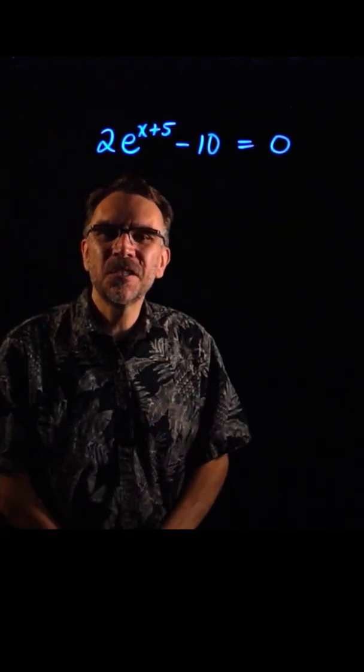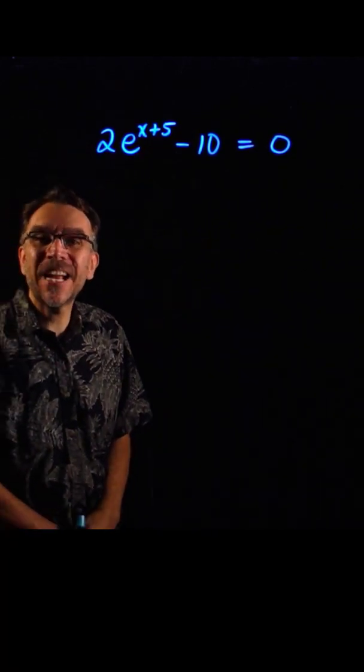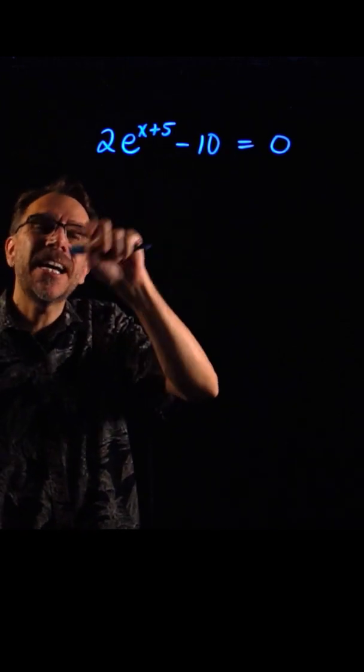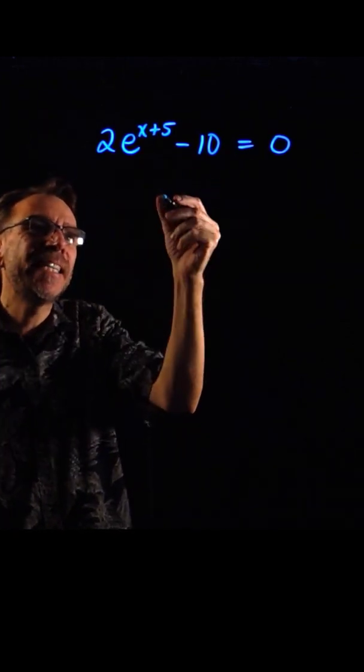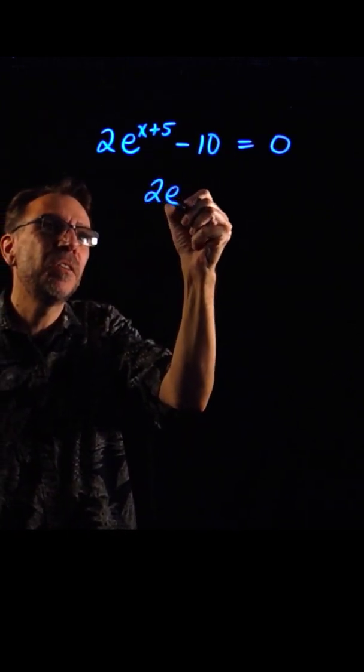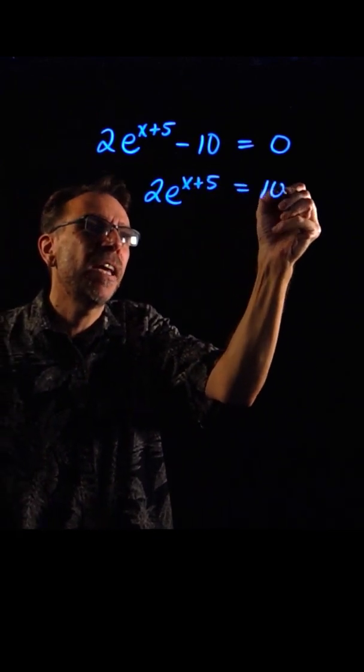Here we're going to make a short, and we're going to solve this exponential equation for x. First thing you want to do is isolate the exponential, so we'll add 10 to the other side. That'll leave us with 2e to the x plus 5 equals 10.